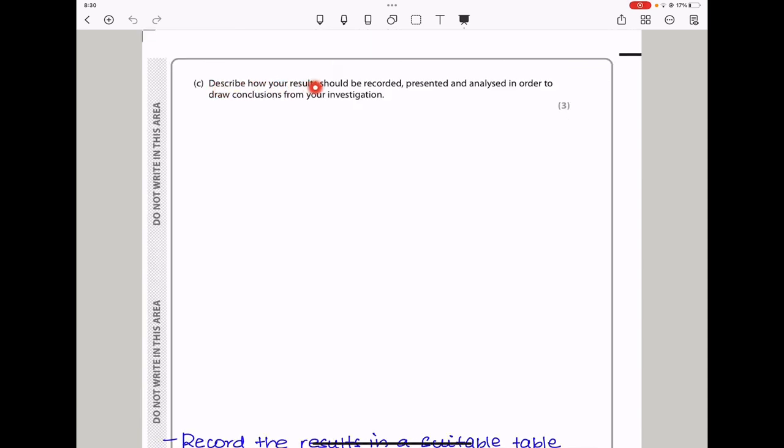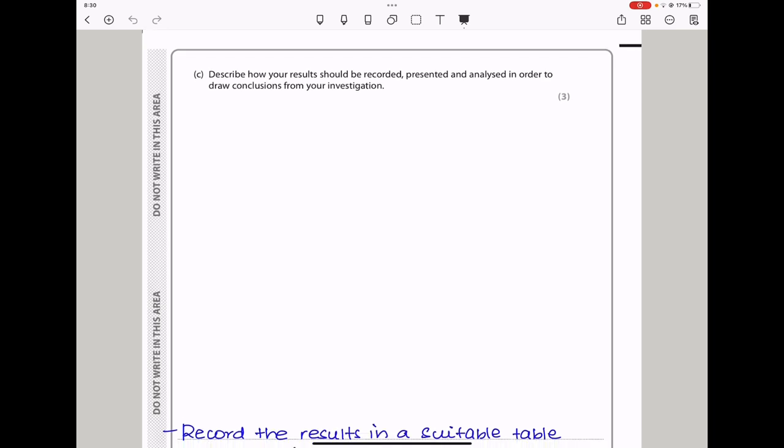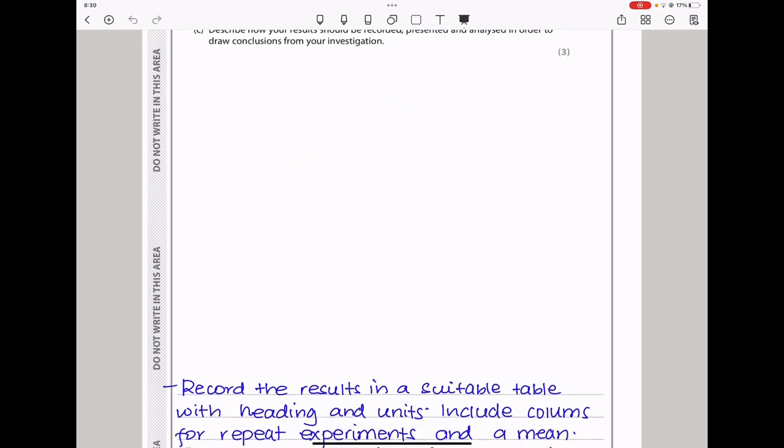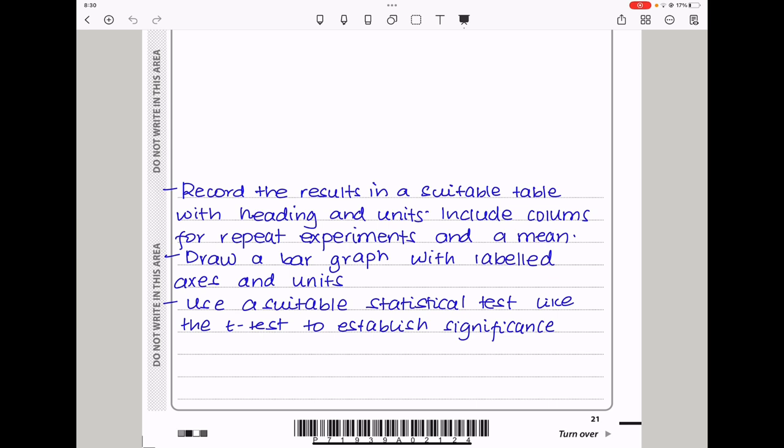Then part C says describe how your results should be recorded, presented, and analyzed in order to draw conclusions from your investigation. In this part, we do not need to draw the table or the graph, but you can just write about it and get the same marks. So I say record the results in a suitable table with headings and units and include columns for repeat experiments and a mean. Then you draw a bar graph with labeled axes and units and use a suitable statistical test like the t-test to establish significance.